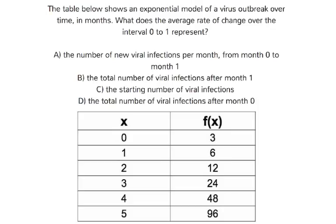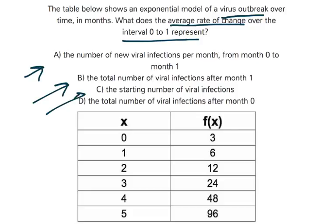In this question, we are being asked to interpret the average rate of change of an exponential model over this interval. The interval in this case is 0 to 1, so let's figure out what's going on in this table. It says the table below shows an exponential model of a virus outbreak, so that'll be important since all the answers down here have context attached to them.